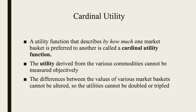A utility function that describes by how much one market basket is preferred to another is called a cardinal utility function. Here the size of the utility difference between the two bundles of goods is supposed to have some sort of significance. Unlike ordinal utility functions, a cardinal utility function attaches to market baskets numerical values that cannot arbitrarily be doubled or tripled, because this will alter the differences between the values of various market baskets. Hence the utility is subjective and a specific utility is assigned to each of the market baskets.